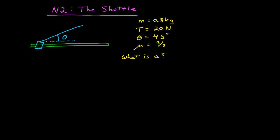In this video I want to do an example using Newton's second law. What I have here is a shuttle - this green steel beam with a steel shuttle that slides along it. It's being pulled by a wire that has some tension as it slides along the beam. We've got a mass of 0.8 kilograms, a 20 newton force in the wire at an angle of 45 degrees with a coefficient of friction of 3 fifths, about 0.6. So we want to know what is the acceleration on this object.